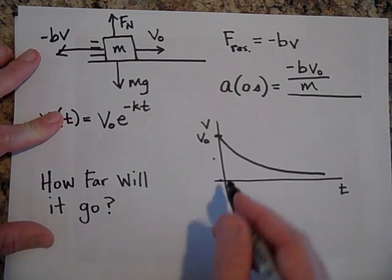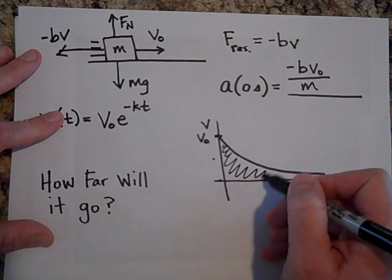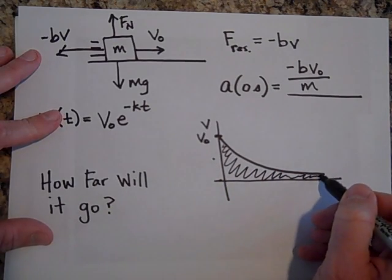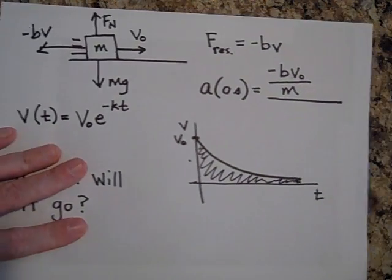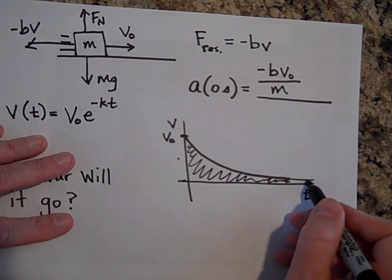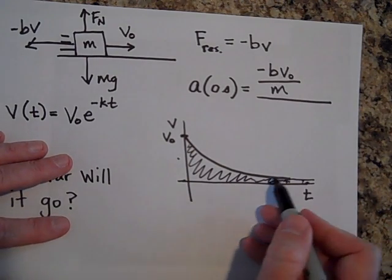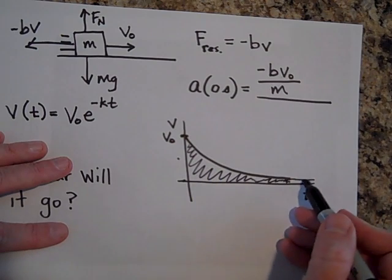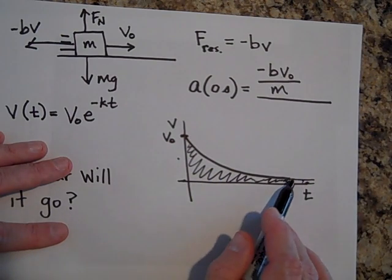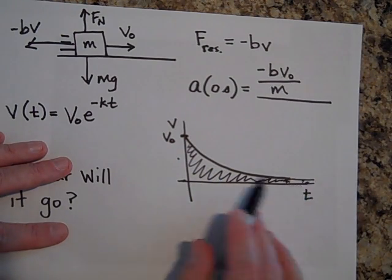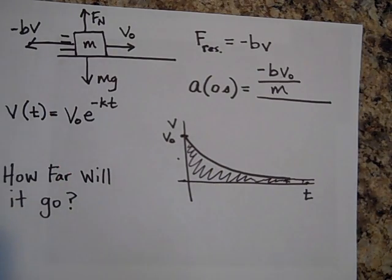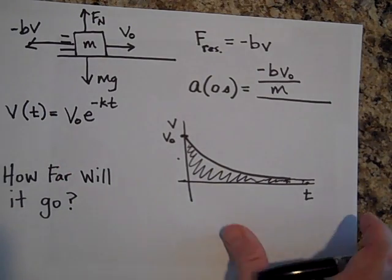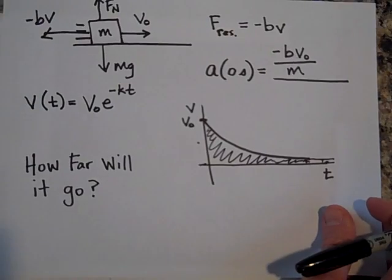It turns out that the area underneath the V versus T graph is displacement. And you might think that if I went out to infinity with this, I'd have to get infinity. Like, how do you not get infinity when you're adding up all those areas out to infinity? But remember, this is getting closer and closer to zero, so it is some finite value. And so the question is, how far will it go?